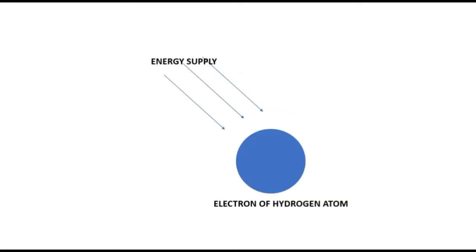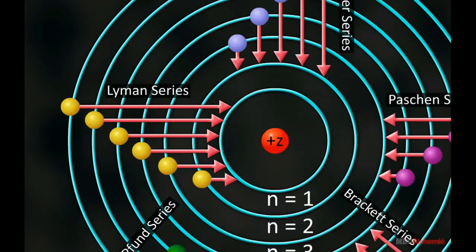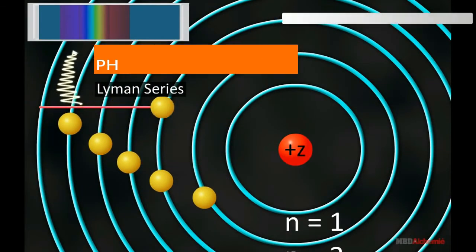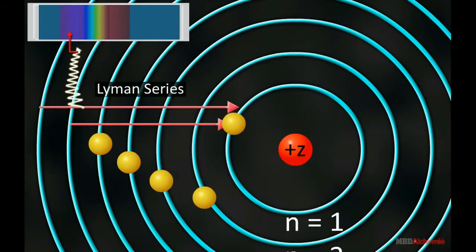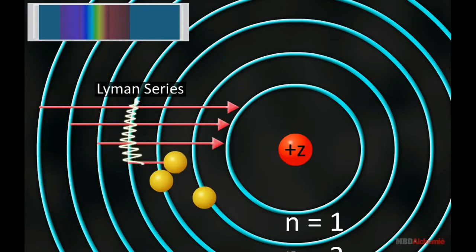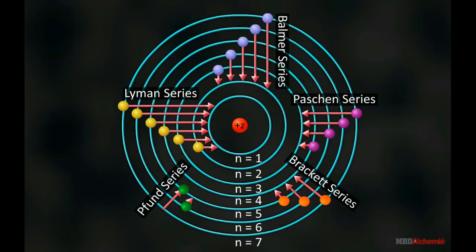The energy supplied is then absorbed by the electron of hydrogen atoms, causing the electron to move from the ground state to a higher energy level. At a higher energy level, the hydrogen atom is said to be in an excited state. When the electron falls back to lower energy levels, radiant energy — photons — are emitted in the form of light at a particular frequency or wavelength. Since there are a lot of hydrogen atoms in the tube, many lines are produced. Each line corresponds to a different wavelength from different energy levels.